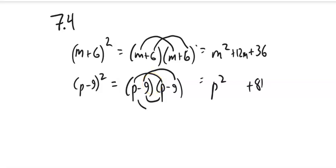And my middle term, -9p, -9p, is 2 of them, 2 of these -9p's. So it's -18p.